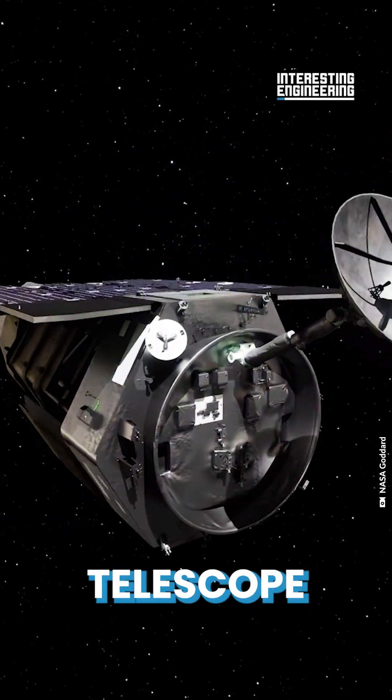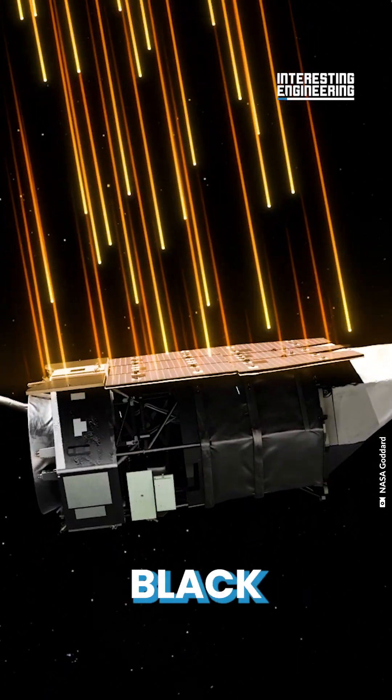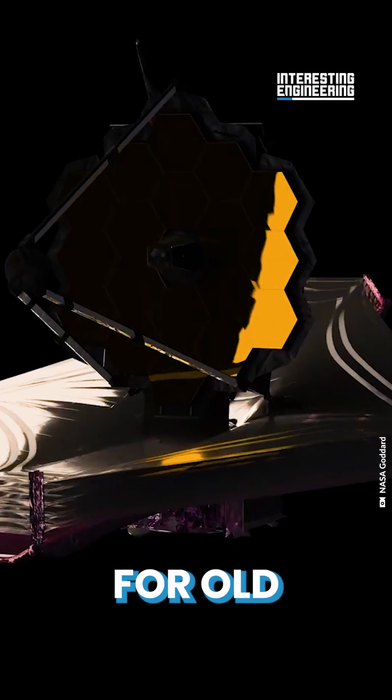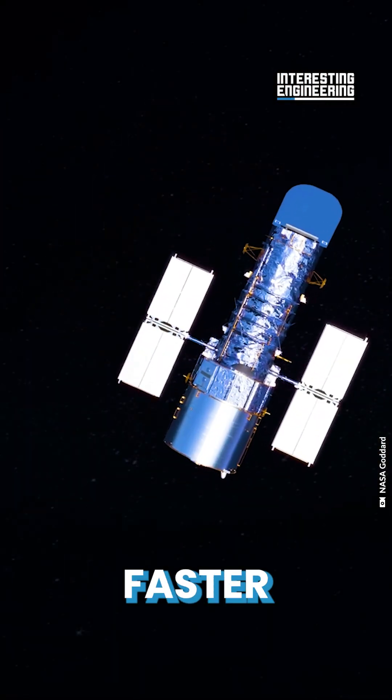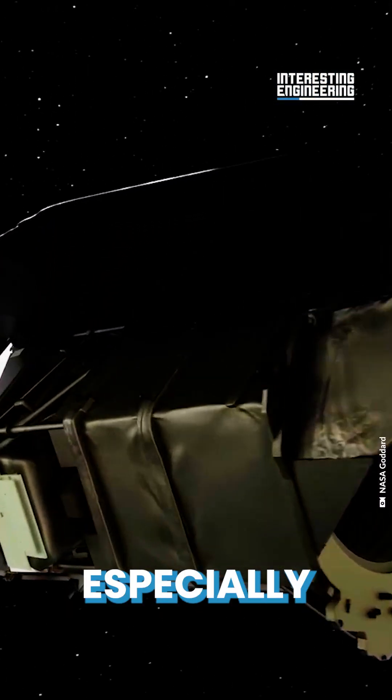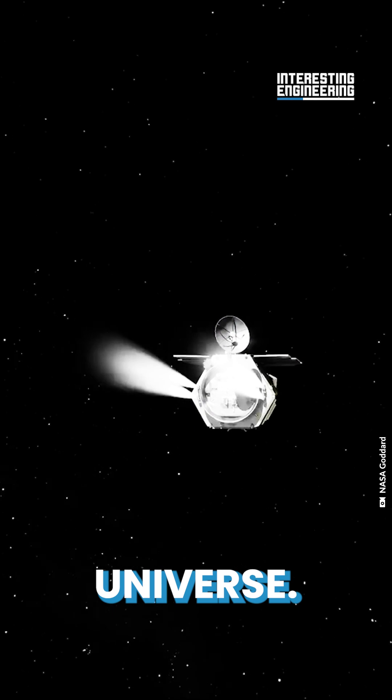NASA has announced a new telescope to investigate potential black holes. The Roman Telescope will look for old black holes 1,000 faster than the Hubble Telescope. The telescope will especially focus on black holes from the very early universe.